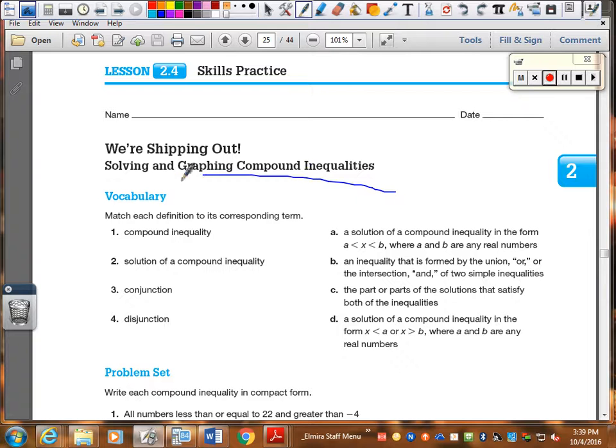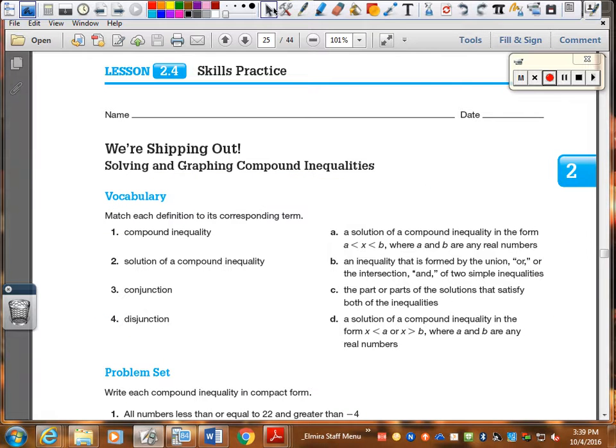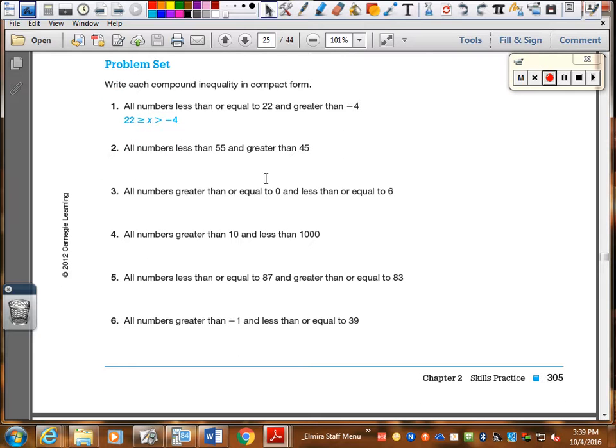Okay. On your homework, don't forget to do the vocab section. Remember, you get a deduction in homework points when you skip it. So, don't forget to do that part. The example one here is good. All numbers less than or equal to 22. And, we can do compact form. Greater than negative 4. In fact, the directions say these are all compact form. So, all numbers less than 55 and greater than 45. If these are all compact form, guys, I don't care what order they wrote the numbers in the problem. The smaller number, the variable, the larger number. Two less thans. Let's see. It says less than 55. So, no equal bar. Greater than 45. No equal bar. So, you just have to read to determine if there will be equal bars or not.